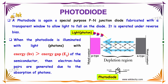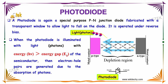It is operated under reverse bias. When the photodiode is illuminated with light, photons with energy greater than the energy gap of the semiconductor cause electron-hole pairs to be generated due to the absorption of photons.